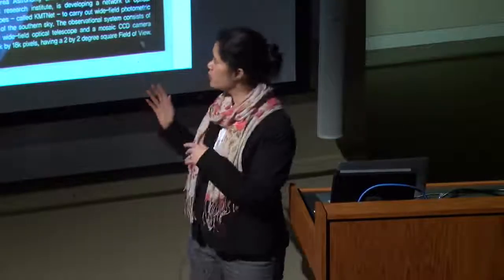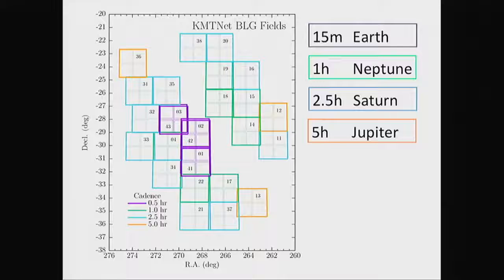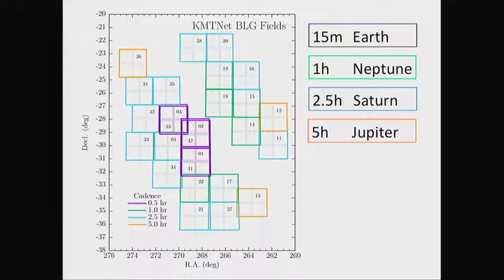I've been working on KMT-Net with two postdocs here, Ingu Shin and Yun-Kil Jung. KMT-Net uses the biggest camera available — two degrees on a side with four chips. The idea is to observe as large an area as possible to get the millions of stars needed to detect microlensing events, but also at a cadence high enough to characterize planetary perturbations. KMT-Net has three fields with 15-minute cadence — good enough to detect Earth-mass planets — seven fields at one-hour cadence for Neptune-mass planets, twelve fields at two-and-a-half-hour cadence, and three fields at five-hour cadence for Jupiter-mass planets.